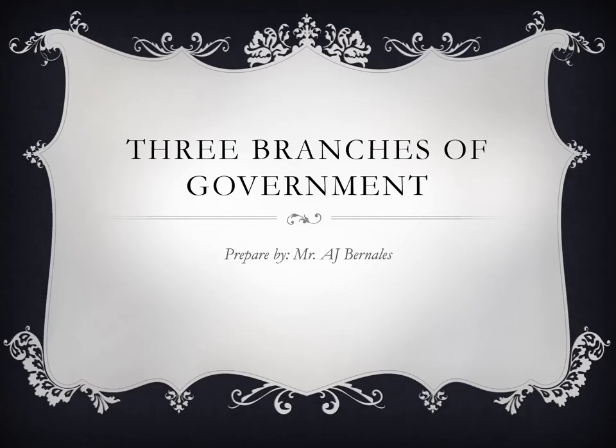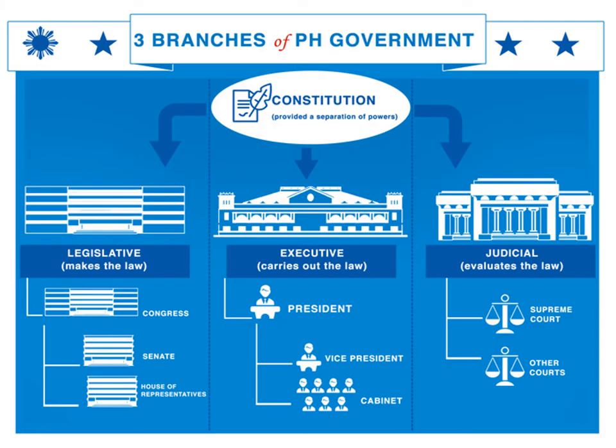One of the manifestations of a democratic and republican state is to have three branches of government by means of the principle of separation of powers and checks and balances.